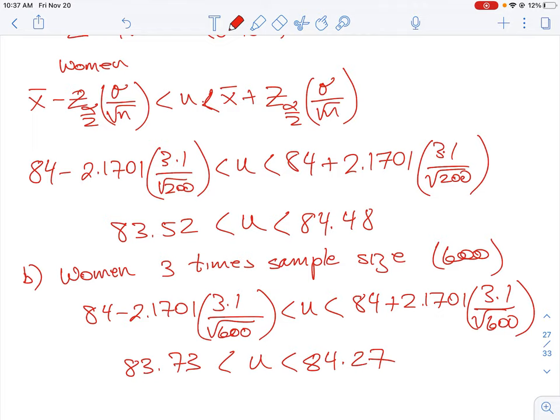So one of the trends, I believe in the question in part C, it says, what happens to the interval as N changes? Well, you can see is that the higher the sample size, the more close the interval is, which means we are getting to have a smaller interval for that particular confidence level.